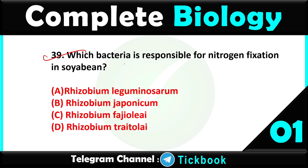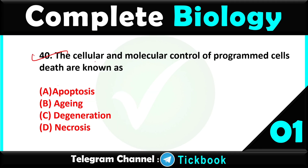Question thirty-nine: which bacteria is responsible for nitrogen fixation in soybean — option number B, Rhizobium japonica. Question forty: the cellular and molecular control of programmed cell death is known as — option number E, apoptosis, is the right answer.